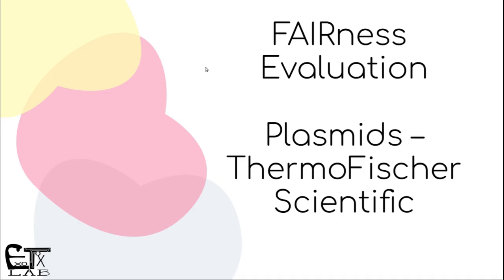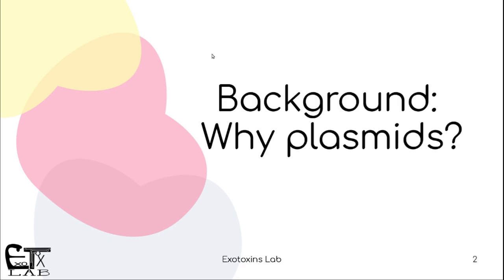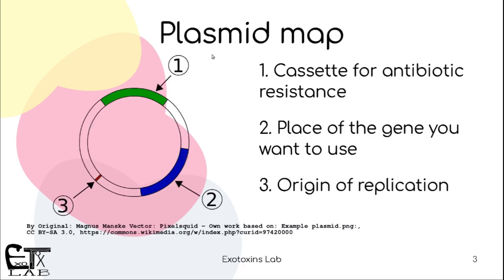Let us start with the fairness evaluation of plasmids offered by Thermo Fisher Scientific. Why plasmids? Plasmids are what we use in the lab to work with genetics, and we take advantage that bacteria like plasmids and we can select the bacteria based on antibiotics. Usually a plasmid map tells you what exactly is inside without using the sequence, and this is a representation of a plasmid map.